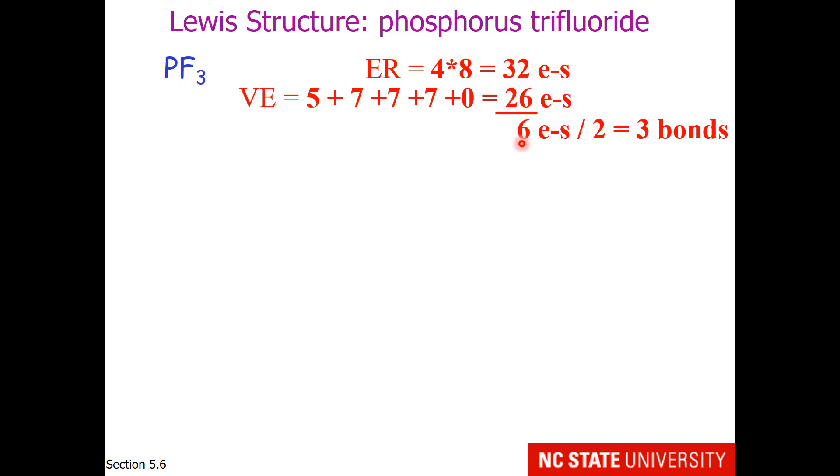There are two electrons in each bond, so divide by two to get three bonds. I like this setup because it sets one up for the lone pair calculation.